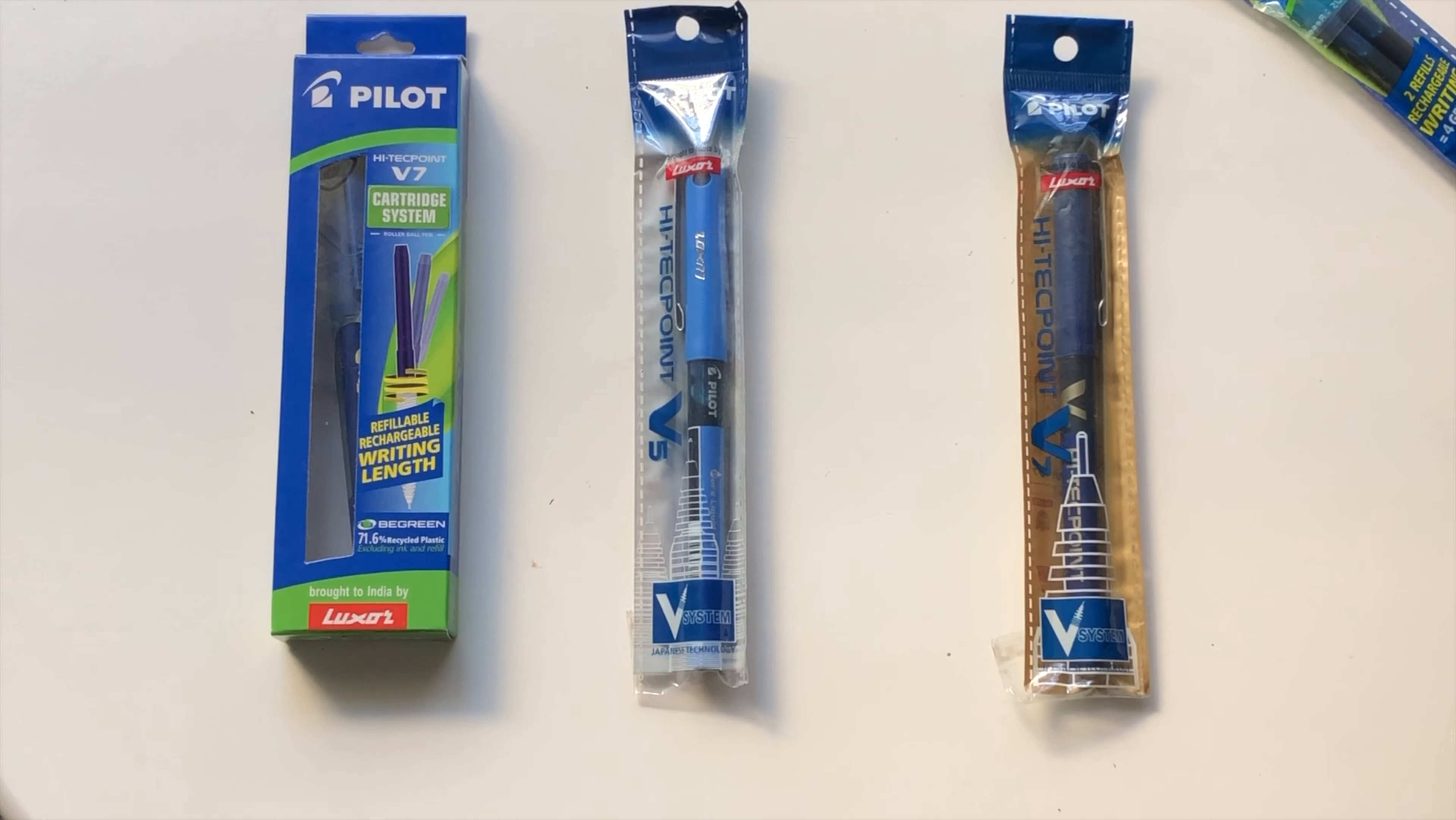That's for the 0.7mm, and this is the ink cartridge. You have blue and black both available in these ink cartridges, so you can buy all of them. That's the first pen unboxed. Now moving on to the second pen, which is the High Tech Point V5 Pilot.